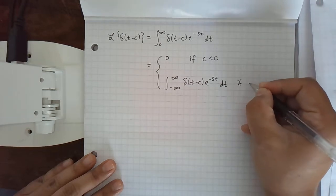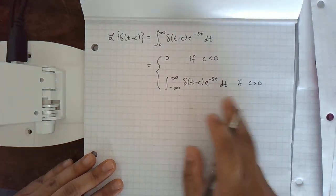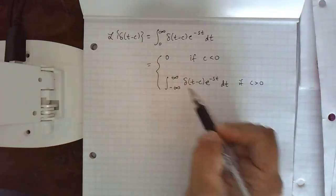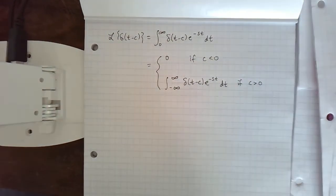Because if c is greater than zero, then adding all the negative real numbers doesn't change anything. The value of this function is zero there.